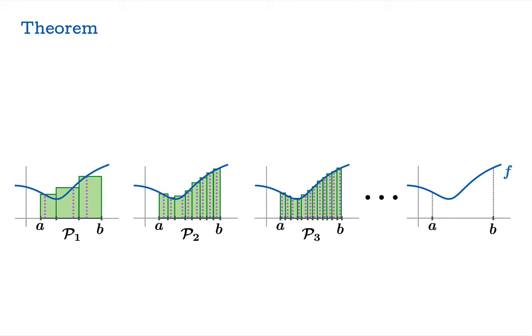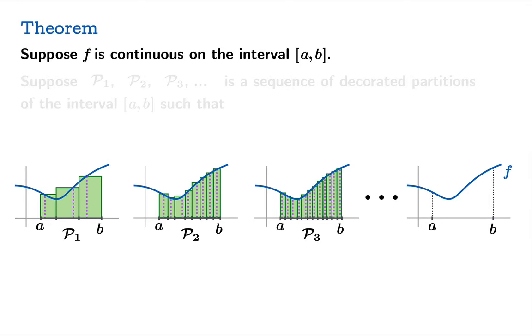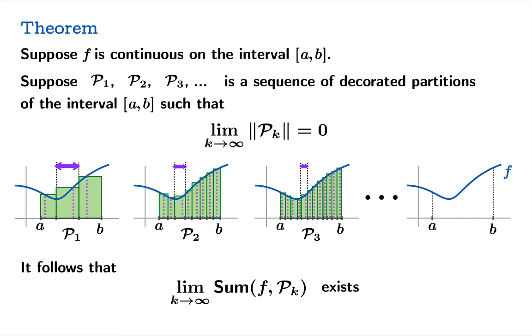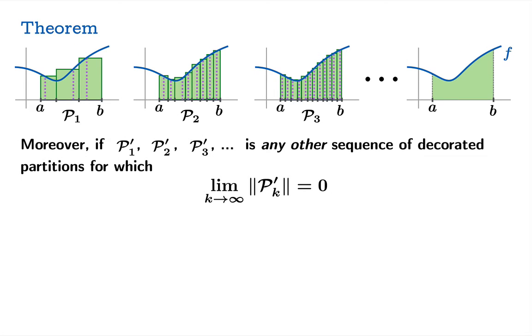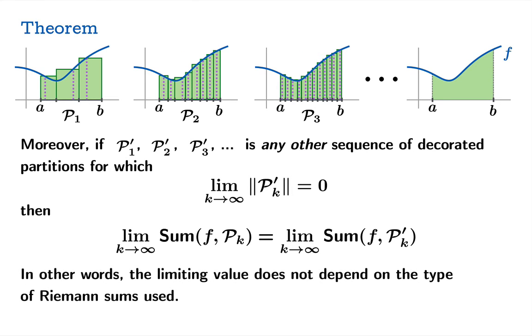Now with this in mind we're able to state the theorem. So suppose f is continuous on the interval from a to b and you have a sequence of partitions whose partition size goes to zero. So in other words they're becoming more and more efficient as you chop up the interval into more and more pieces. Under these circumstances the limiting value of the Riemann sums actually exists. As a matter of fact that number is what we wind up interpreting to be the signed area under the graph of f. There's a second part to this theorem though that's very important and that second part of the theorem says if you come up with some other sequence of partitions whose partition sizes go to zero then in fact the limiting value of those Riemann sums also exists. But it's not going to give you a different number. It's going to give you the same number as before. In other words the limiting value of Riemann sums just doesn't depend on the type of Riemann sums that you use.